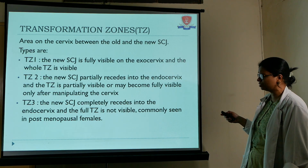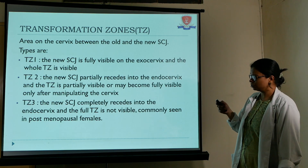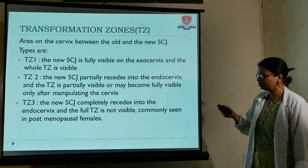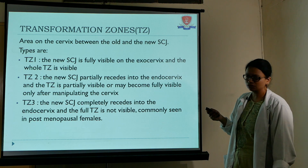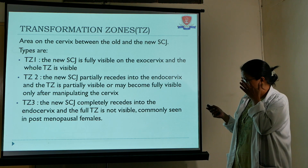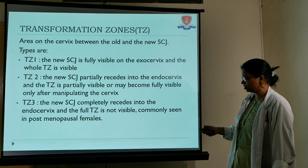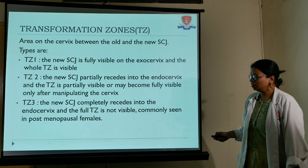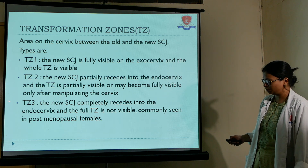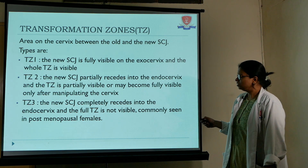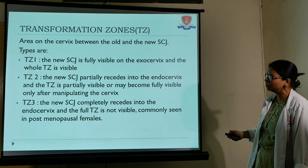There are three types of transformation zone. Transformation zone 1: the new squamous columnar junction is fully visible on the exocervix and the whole transformation zone is visible. Transformation zone 2: the new squamous columnar junction is partially present in the endocervix, but when we manipulate the cervix with instruments the full transformation zone can be seen.